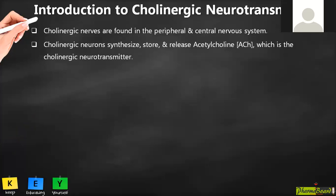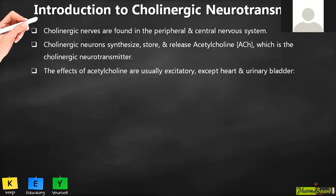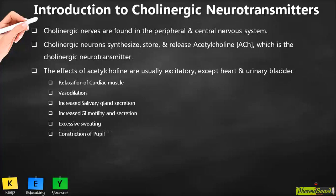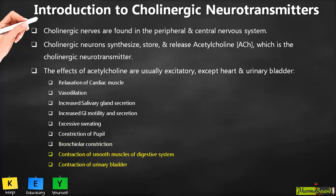Acetylcholine can act on both the peripheral nervous system and the central nervous system. Its effects are usually excitatory, but there are exceptions with two systems: the cardiovascular system and the urinary system. In the cardiovascular system, specifically the heart, acetylcholine does not excite or contract the myocardium.